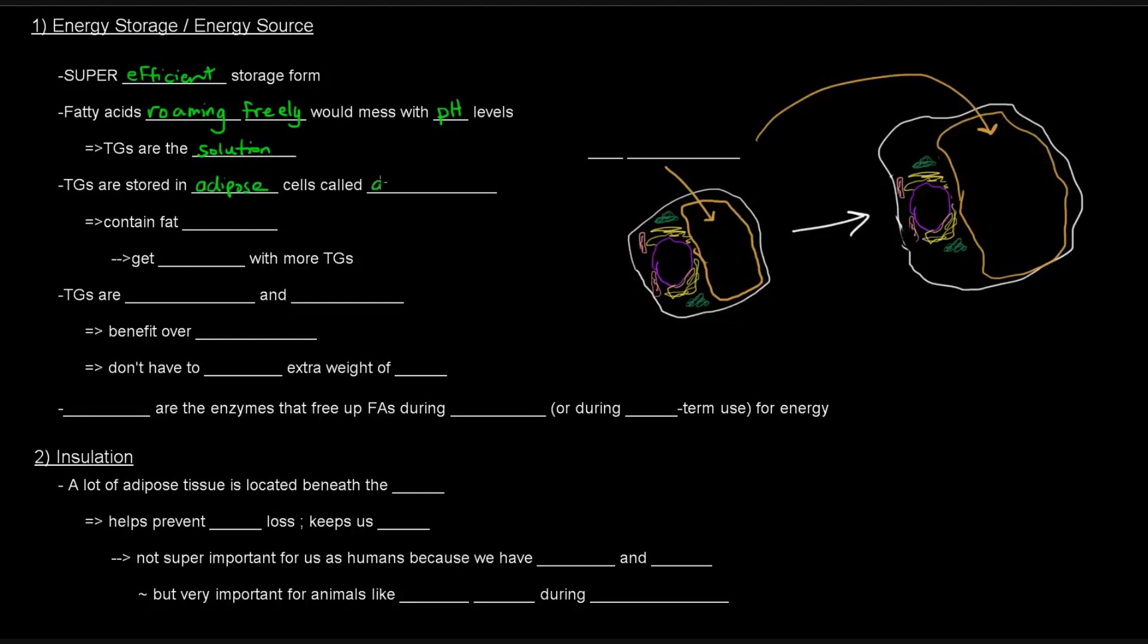Now, triglycerides are stored in these things called adipose cells, specifically called adipocytes. They contain these things called fat droplets or fat reservoirs. And that's what I've drawn here in that little brownish yellow color. These are fat droplets or fat reservoirs. And these things actually will get bigger as the amount of triglycerides grows. So, here we've got this fat reservoir A. And going to B, B has many more triglycerides than A. These get bigger or larger with more triglycerides.